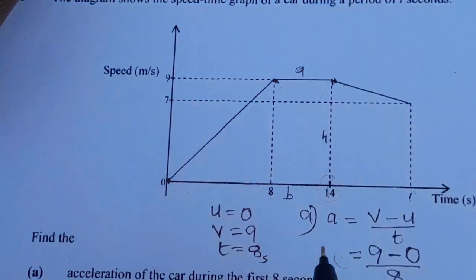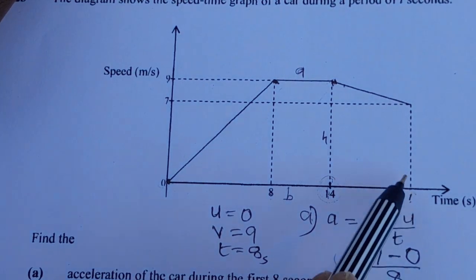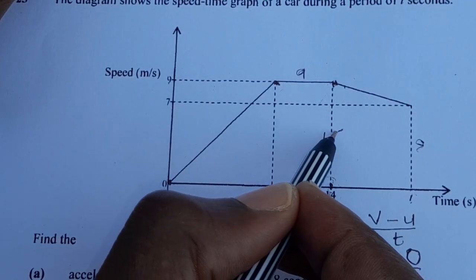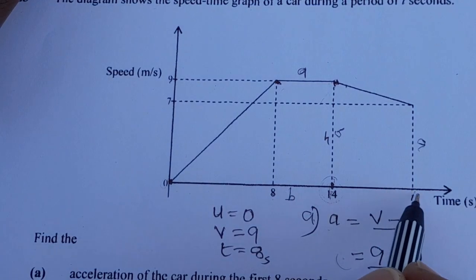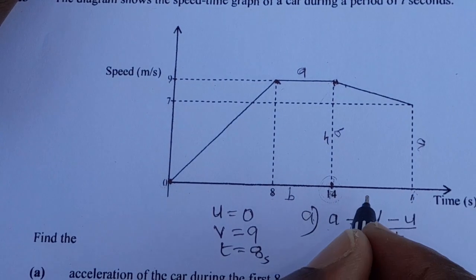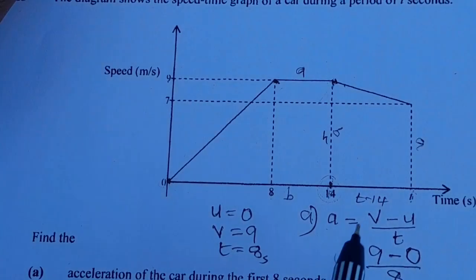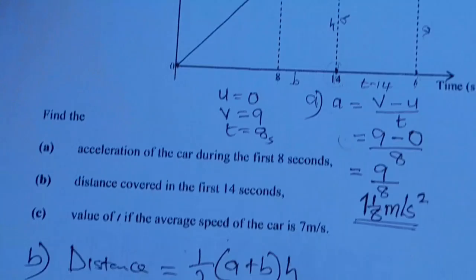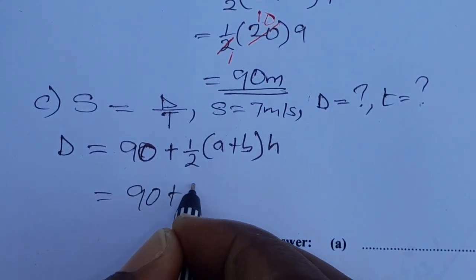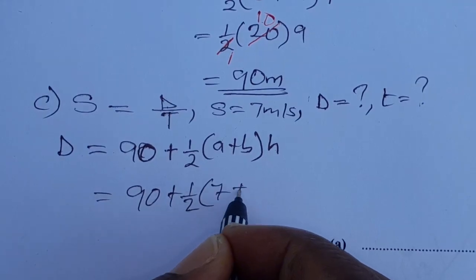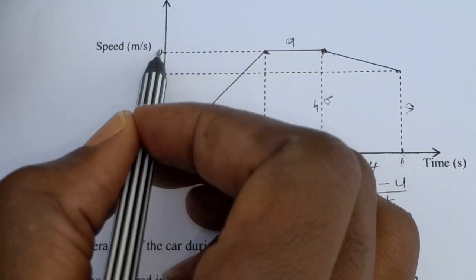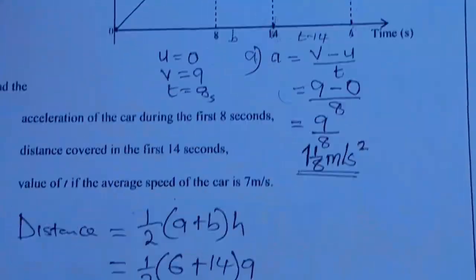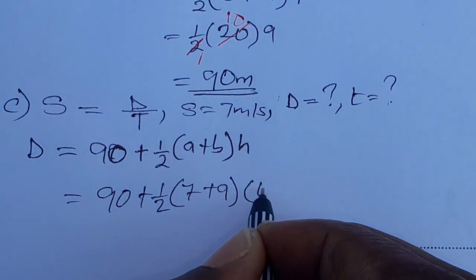This trapezium is facing upward. The distance from here to there is A, the distance from here up to here is B, and the height is T minus 14. A is 7, B is 9, and the height is T minus 14.